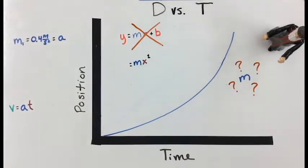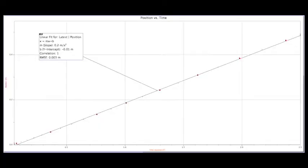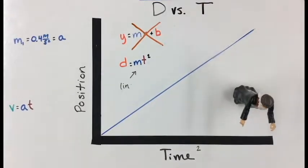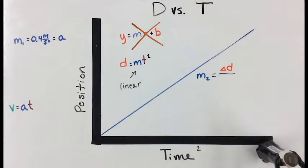Our graph looks like y equals x squared, which in our case is d equals t squared. If we put t squared on our x-axis instead of t, we can see that our data is now linear with a slope equal to the change in position over the change in the square of time.